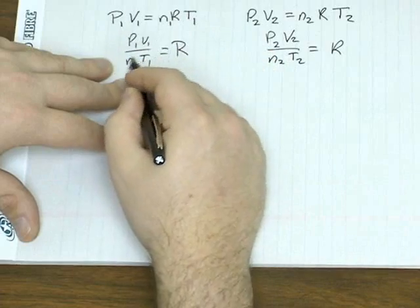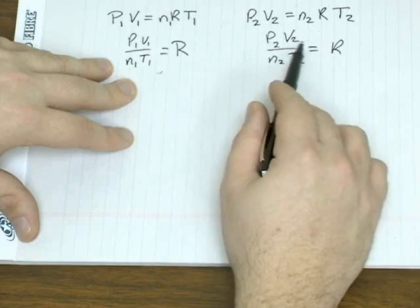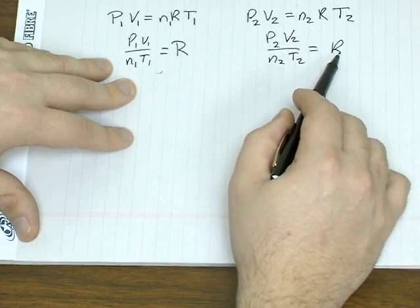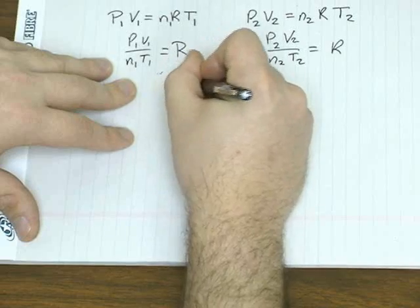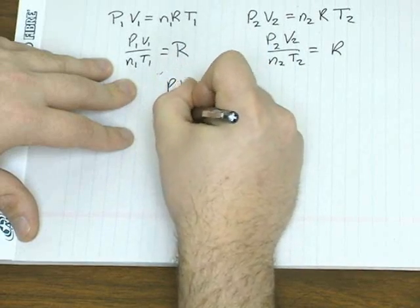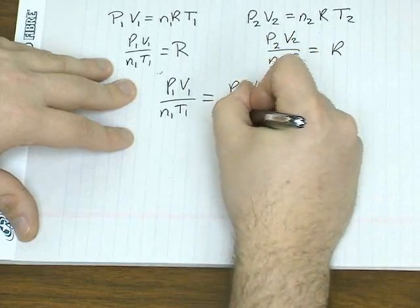So for this pressure, volume, amount, and temperature for a gas, it's going to be equal to R. For this other set of conditions, it's also going to be equal to the same thing. So if they're both equal to R, they're going to be equal to each other.